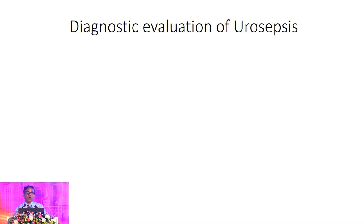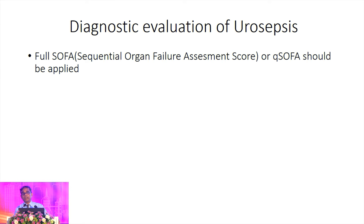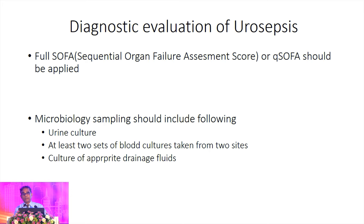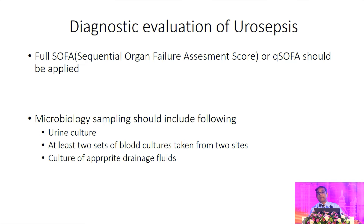How are we going to diagnose urosepsis? Screening has to be done with the full SOFA score or qSOFA score as with other cases of sepsis. In addition, extensive microbiological workup has to be undertaken: urine culture and at least two sets of blood culture — I stress two sets because that will catch intermittent bacteremia and enhance positivity rates. If there is any drainage or collection from internal organs such as the kidney, we would like to culture it. If you can incorporate aspirate from internal organs into a blood culture bottle, the isolation rates will be very high — so as a microbiologist I appeal to you: if you are aspirating from the kidney, bladder, or ureter, please collect it into a blood culture bottle for better and faster results.